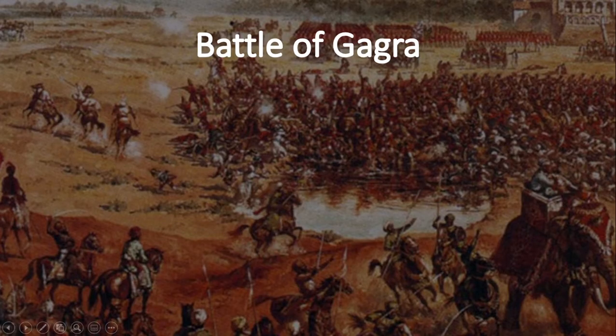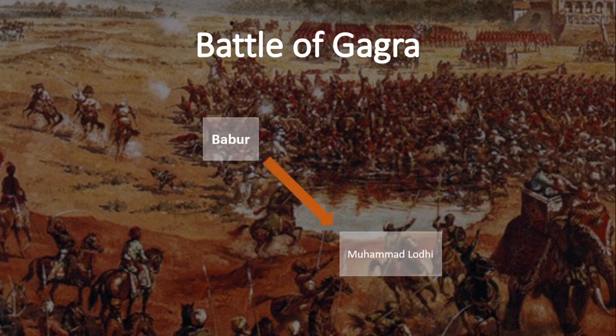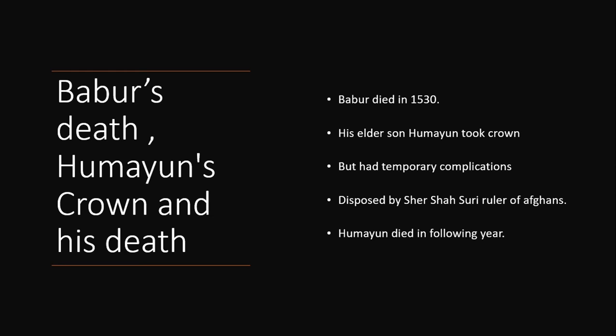Moving on to the next opponent, Babur shifted focus to the Afghan chiefs who had captured the city of Lucknow during his conflict with Rana Sangha. Babur attacked the Afghans who were led by Muhammad Lodhi, brother of Ibrahim Lodhi. This battle is also known as the Battle of Ghagra. Babur again got victory over Mahmud Lodhi and the Afghans. The Mughal Empire had now spread through much of Northern India.